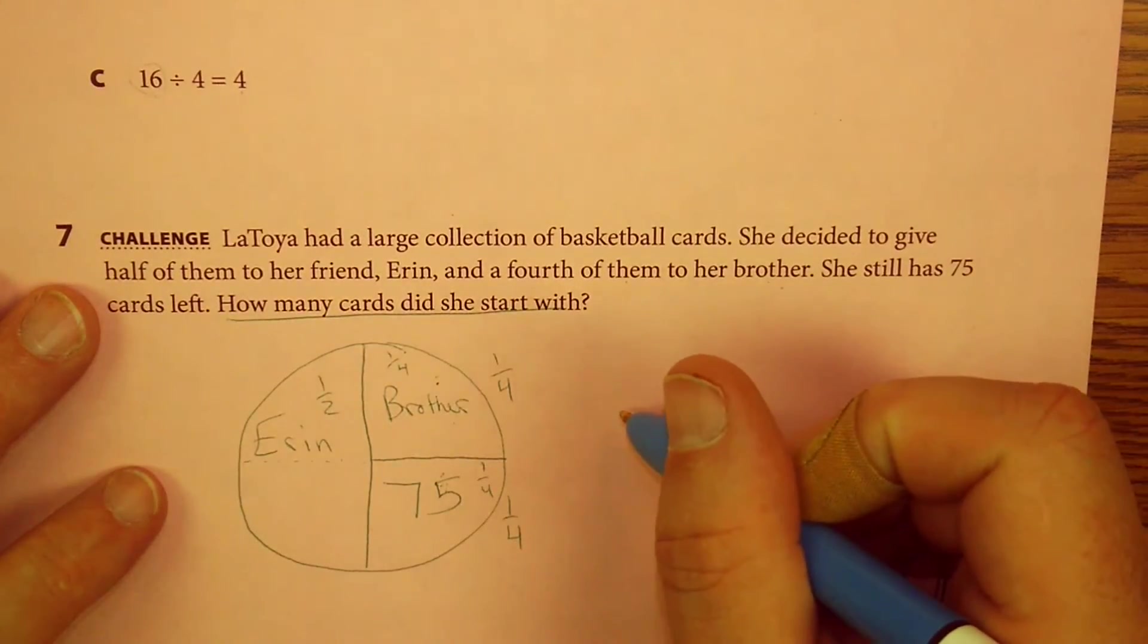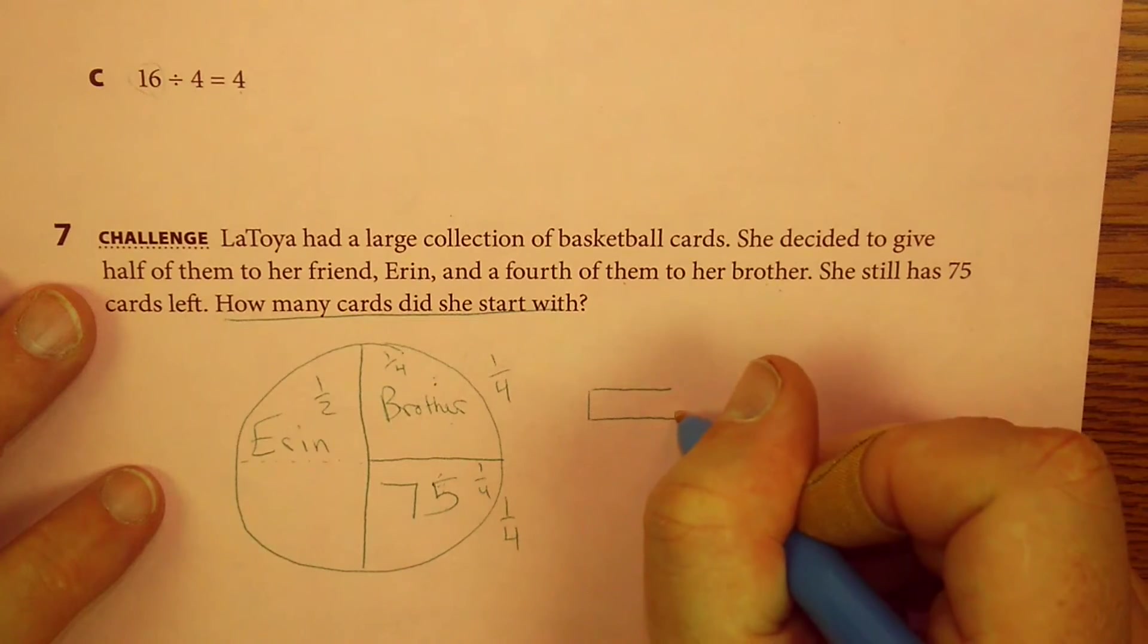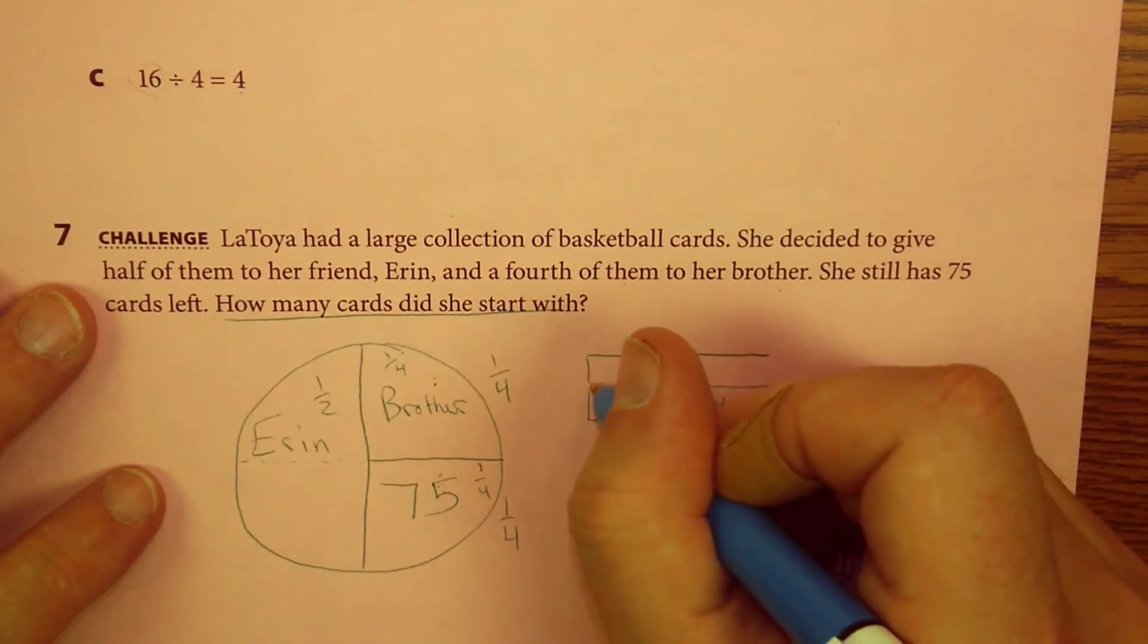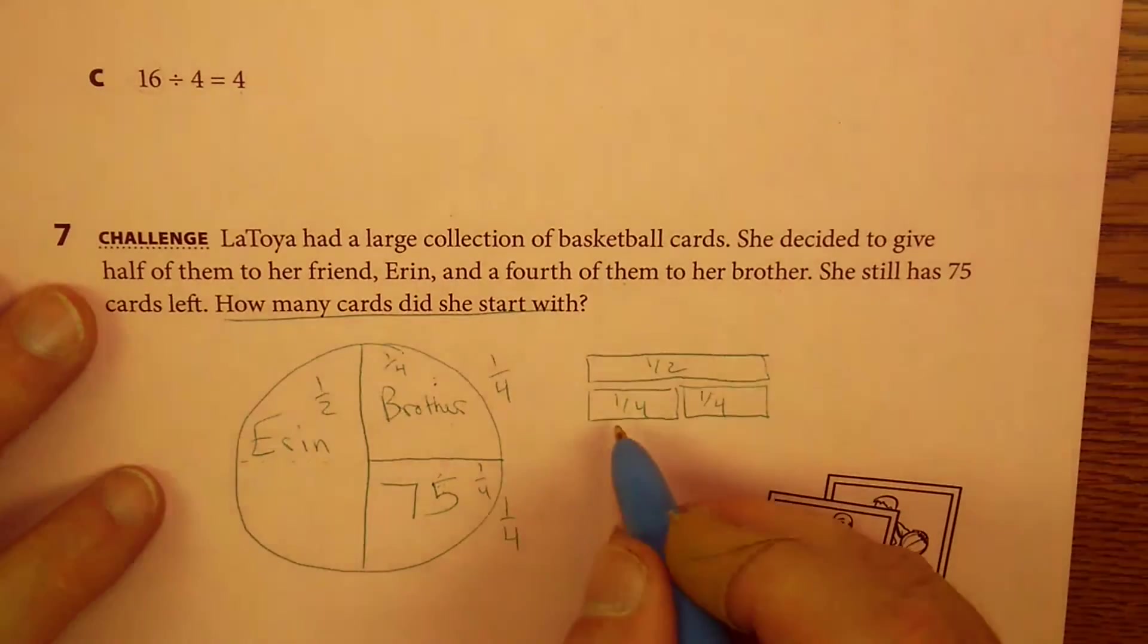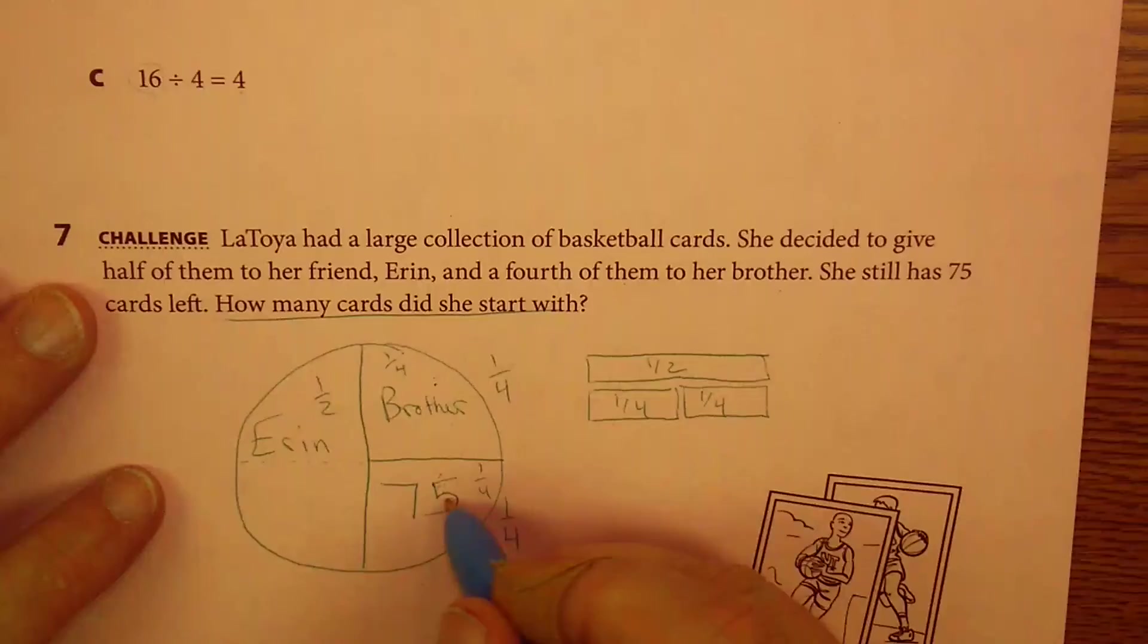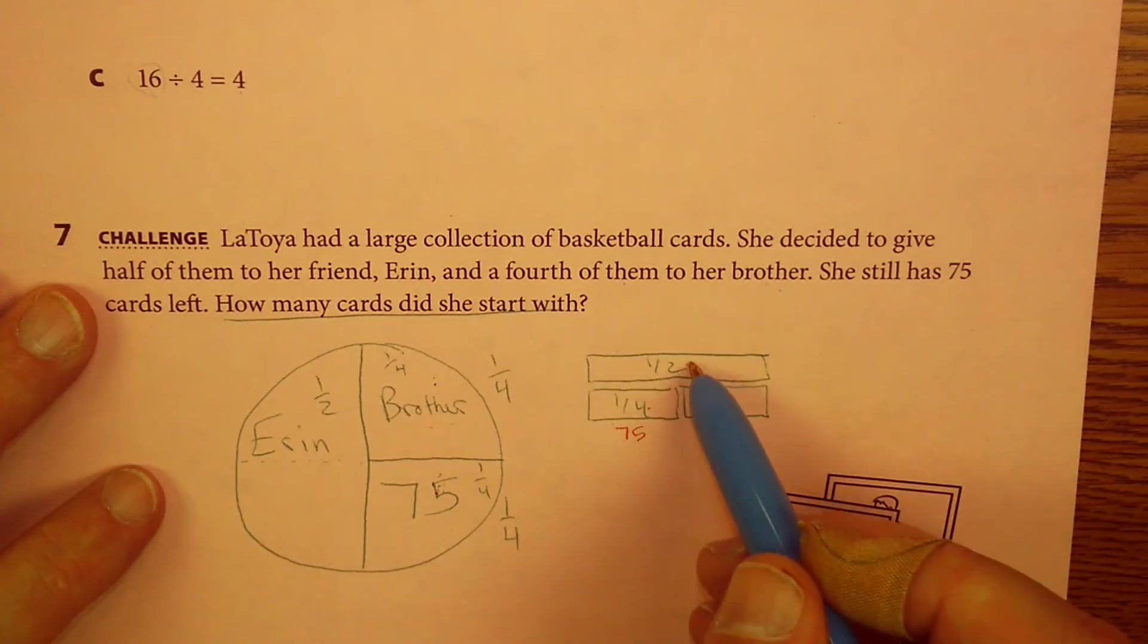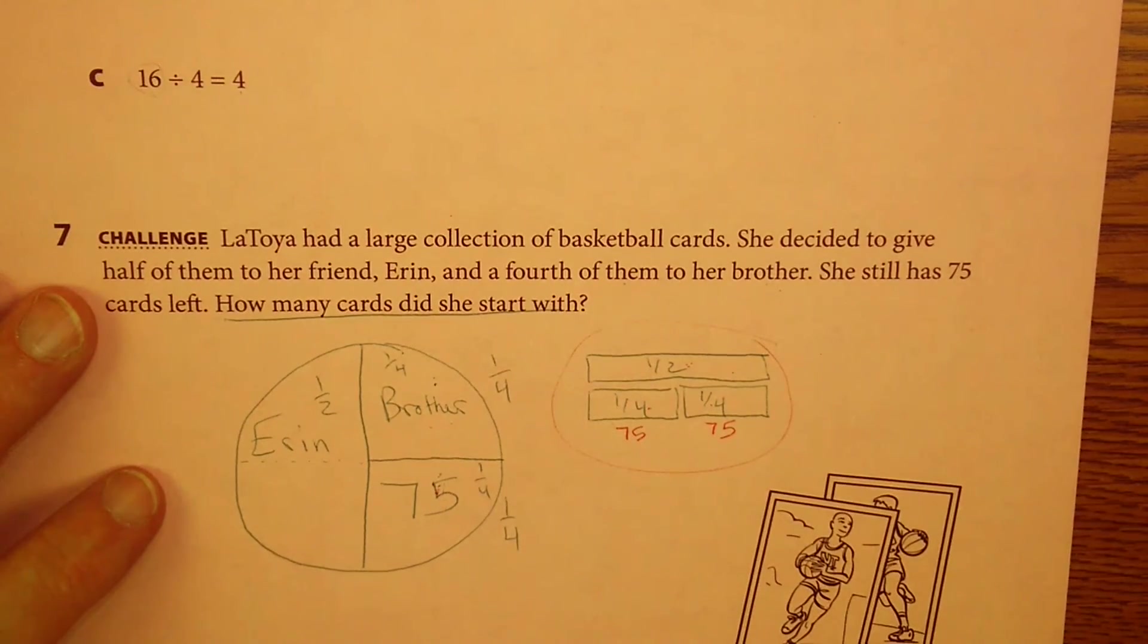One of the things that we learned when we were doing our fraction pieces, if you remember the fraction tiles, one of the things that we learned, I'm going to try to draw this as well as I can, that one-fourth and another one-fourth are the same as one-half. So, think of it this way. If this quarter, this fourth is 75, and this has to be the same, and this half has to be a combination of these two. If you can combine all of these together, you will know how many cards she had.